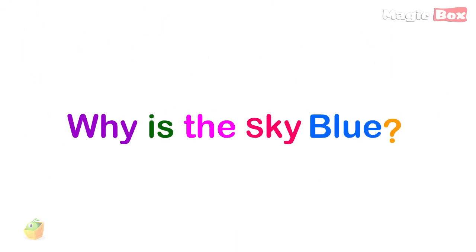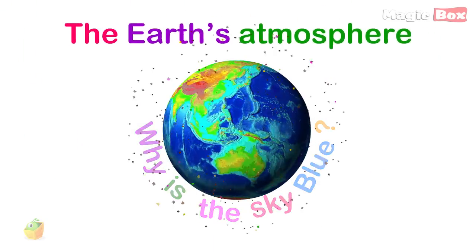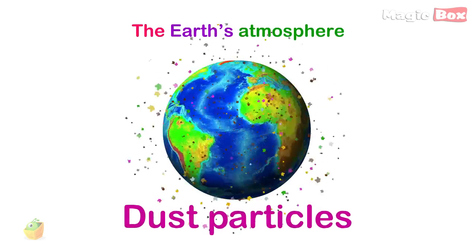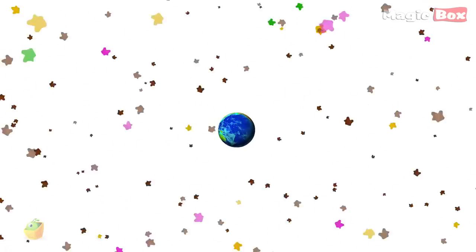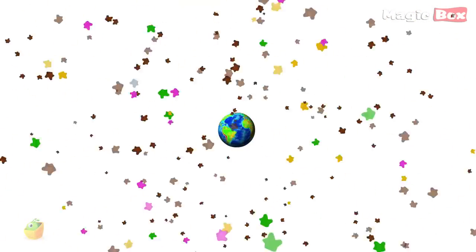Why is the sky blue? The Earth's atmosphere is filled with trillions of tiny dust particles. These particles are too small to be seen with the human eye.